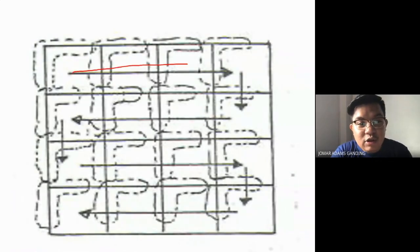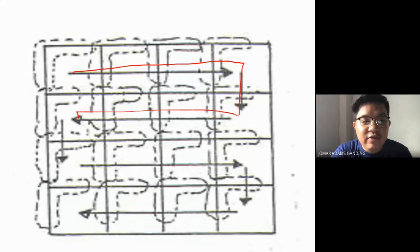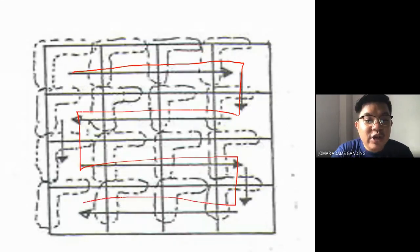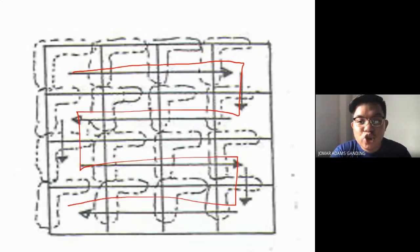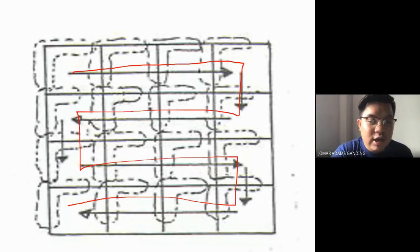When counting, you go across a row, then down, then left, then down again — this systematic pattern ensures you count everything in the Neubauer chamber.